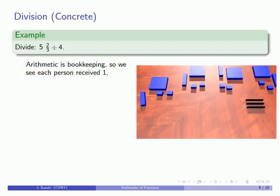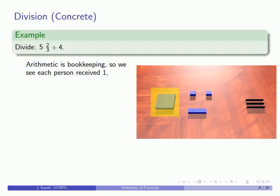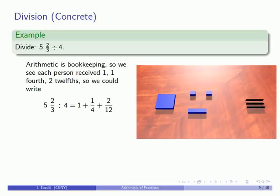We can determine that each person received 1, plus 1 of these parts which was a fourth, and 2 of these parts which were twelfths. So our correct but not complete answer is that our quotient is 1, 1 quarter, and 2 twelfths.